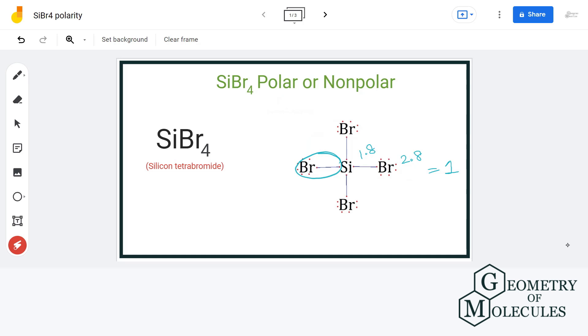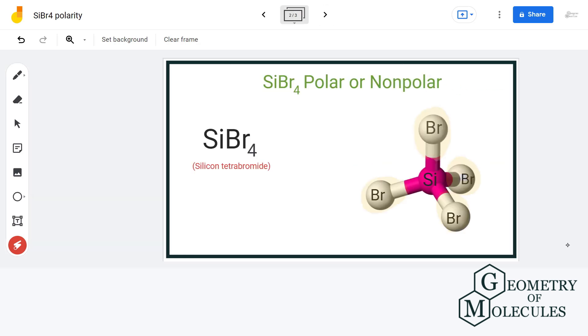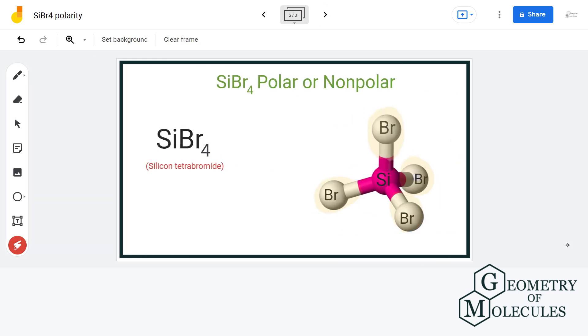And in this case, no lone pairs of electrons are present on the central atom that could possibly break the symmetry in the molecule. The molecular shape of SiBr4 is also very symmetrical which is tetrahedral.